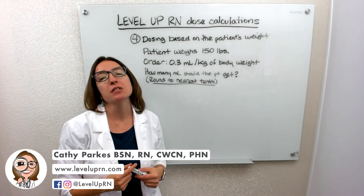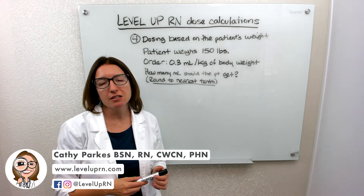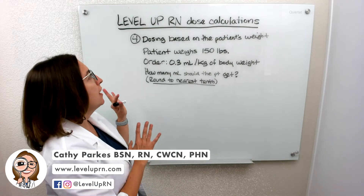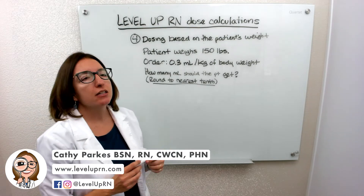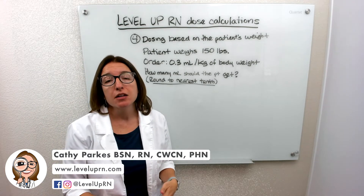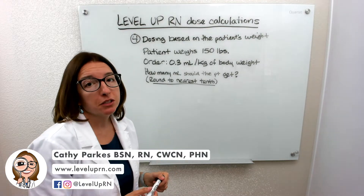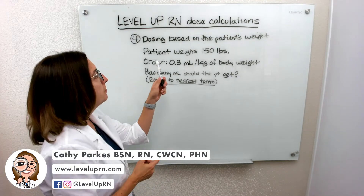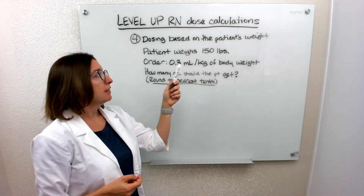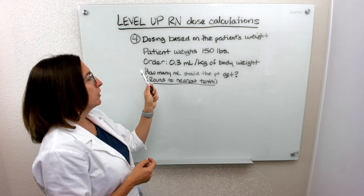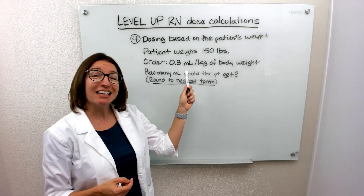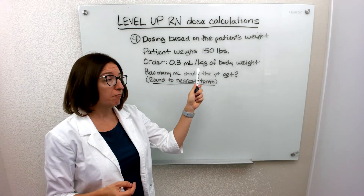Continuing on with our dosing calculations, I'm on problem 4, which deals with how to calculate dosing based on a patient's weight. So in this particular problem, the patient weighs 150 pounds, and the order is for 0.3 milliliters per kilogram of body weight.